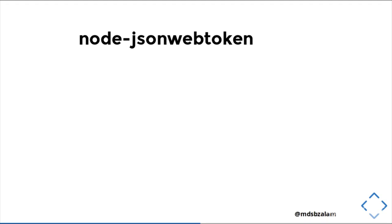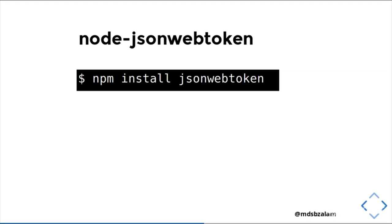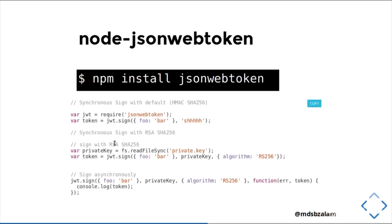Let's look into the Node JSON Web Token approach. We will install the JSON Web Token package using npm. It requires the JWT package and uses a function to encode your data. Here is your payload — foo bar. Here is the secret which is needed to sign your JWT, and it will give you the token. By default, synchronous signing uses HMAC SHA-256, but you can also choose your algorithm according to your preference. It also uses a private key to sign the token.